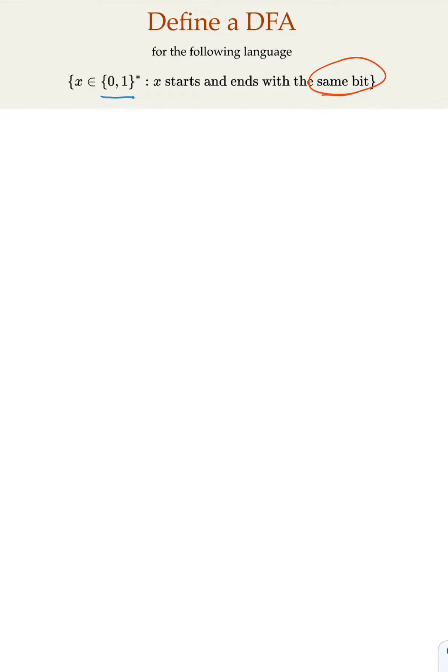Now, as always, we're going to use Q0 for the initial state. The initial bit could be 0 or 1, so we're going to enter either Q1 or Q2.